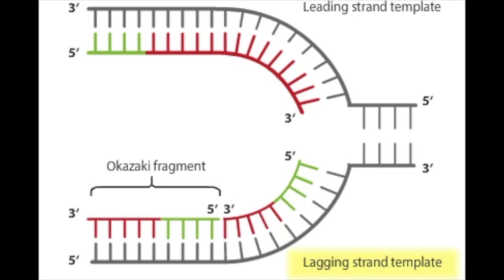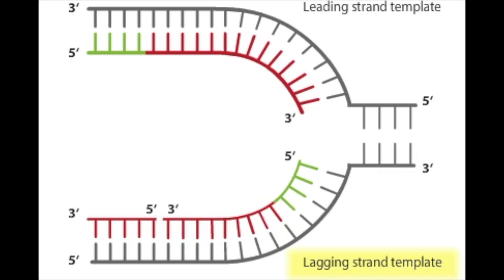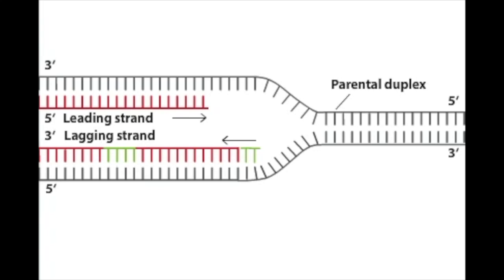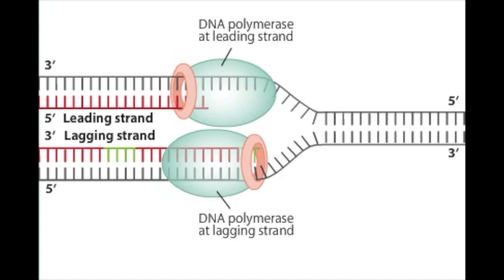As replication proceeds, the RNA primer of the first Okazaki fragment is replaced by DNA, and then the lagging strand fragments are ligated together. Here is an animation of the coordination of the leading and lagging strands during DNA synthesis. DNA is replicated by continuous synthesis of a leading strand and discontinuous synthesis of a lagging strand. Coordination between leading and lagging strand synthesis is achieved by the dimerization of DNA polymerase molecules at the replication fork.